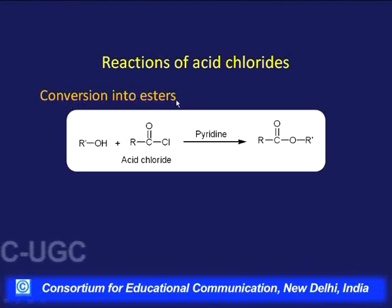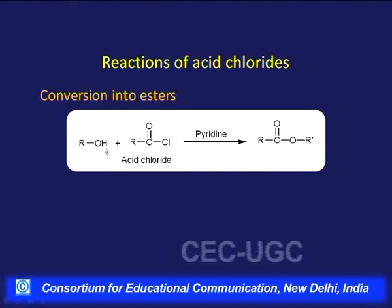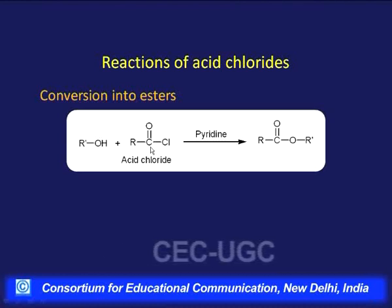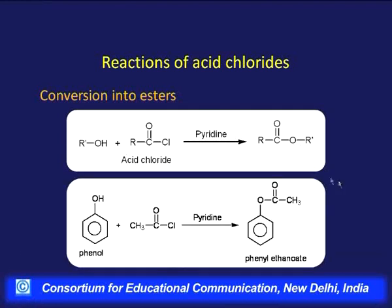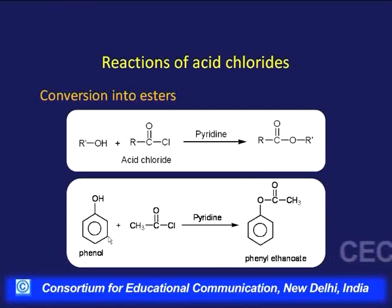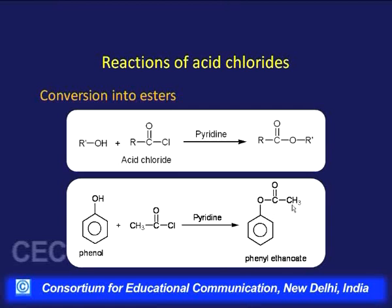Acid chlorides react with alcohols or phenols to form esters, with loss of HCl. A base like pyridine or another tertiary amine is used to remove the HCl. For example, acetyl chloride reacts with phenol in presence of pyridine to give phenyl ethanoate (phenyl acetate), where the oxygen of the phenol acts as a nucleophile attacking the carbonyl carbon.